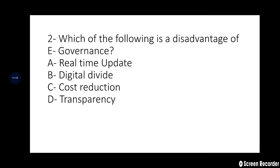Second question: Which of the following is a disadvantage of e-governance? A: Real-time update, B: Digital divide, C: Cost reduction. The right answer is option B — digital divide. This is a key challenge the government faces during e-governance. Real-time updates and cost reduction are advantages; paper costs reduce and transparency increases. But digital divide, economic poverty, privacy, and security are all challenges.